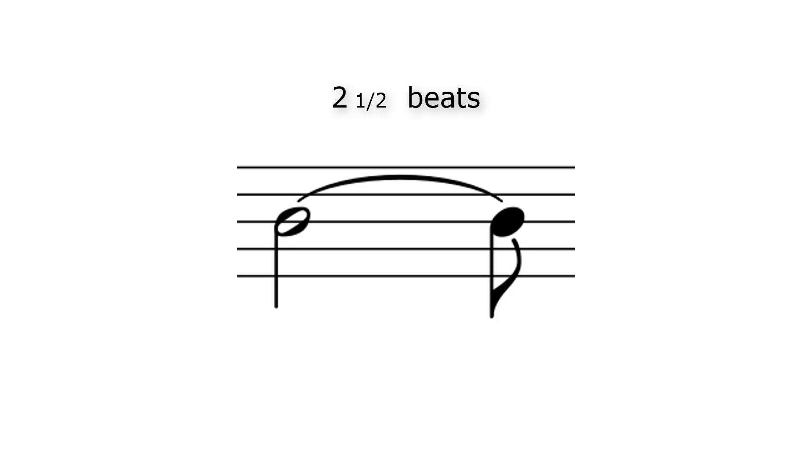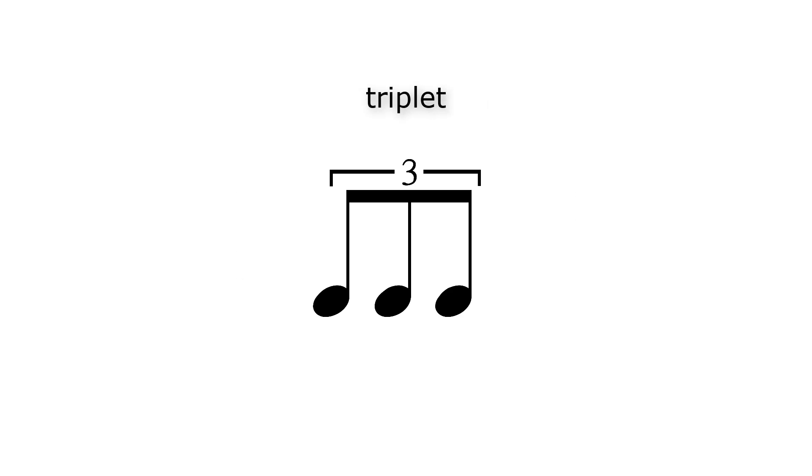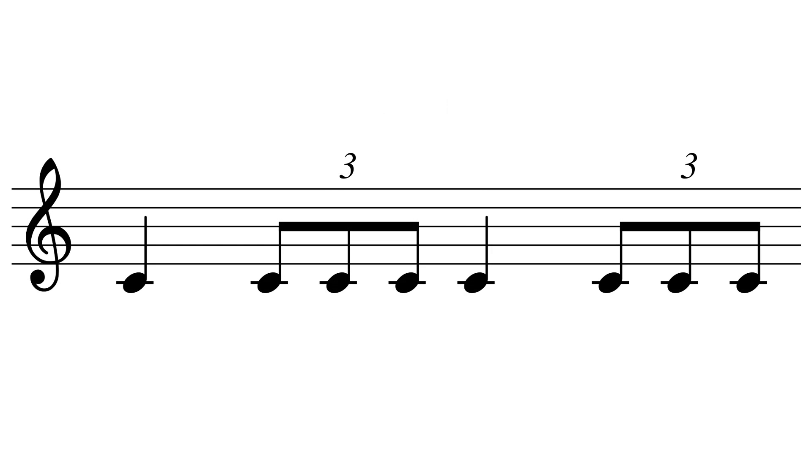Now have we seen all the note durations? No, there are more note durations, like for example the triplet. Here is an example of a triplet. This triplet has a total duration of exactly one beat. So there are exactly three notes in one beat. In the next example you can hear how this sounds. And as usual you will hear the metronome count to four before it begins.